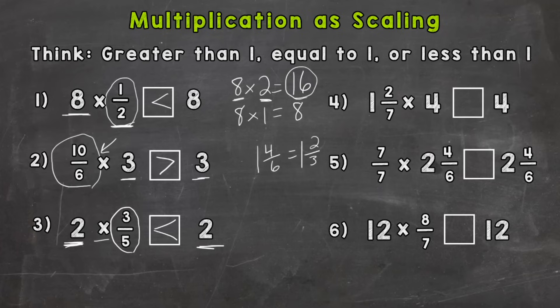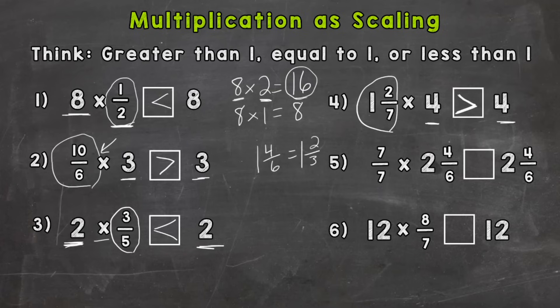Number 4: 1 and 2 sevenths times 4. We need to see which side is greater, or maybe both sides are equal. We have a 4 on each side. On the left-hand side, we're multiplying by 1 and 2 sevenths, which is something greater than a whole, so it's going to bring the value of that 4 up. So this side is greater — 1 and 2 sevenths times 4 is going to give us an answer that is greater than 4.